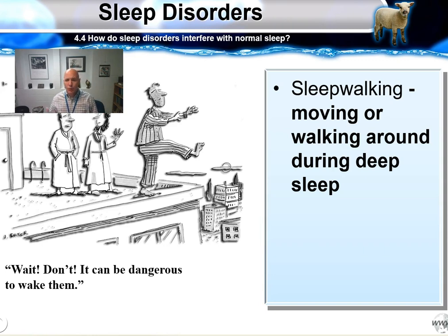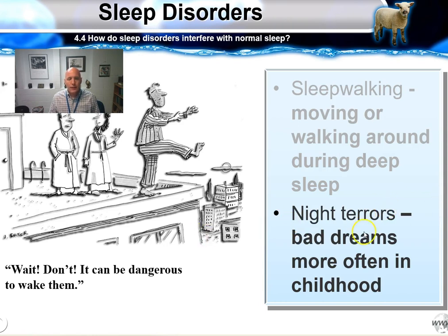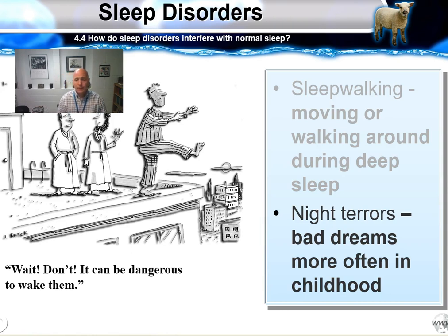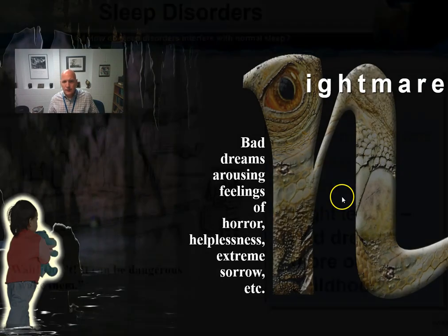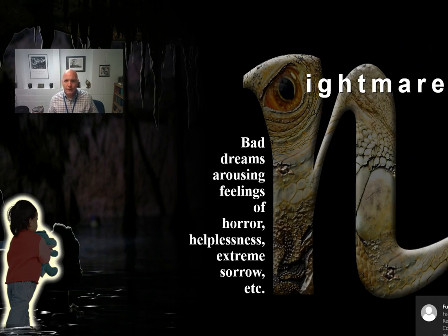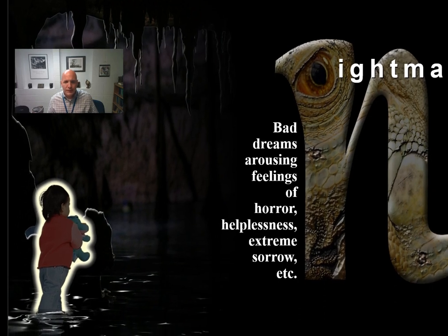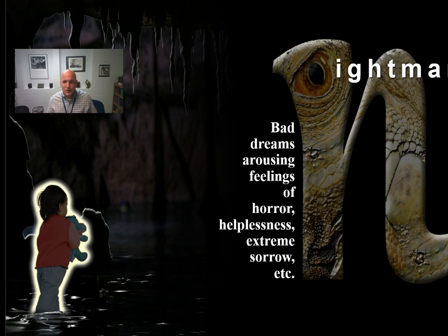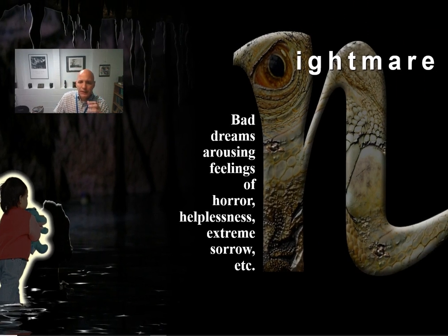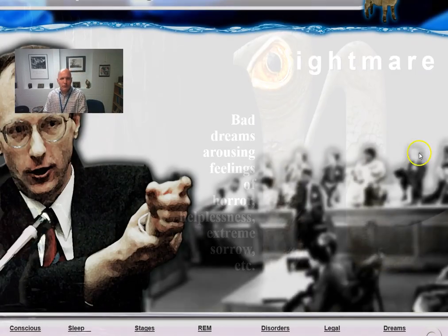Sleepwalking and sleep talking are both referred to as somnambulism. Sleepwalking is moving and walking around during deep sleep. Night terrors, more frequent in young children, involve screaming, kicking, and yelling during stage four sleep — children are very resistant to being awakened. Night terrors are different than nightmares. A nightmare is simply a stage one bad dream; night terrors are stage four. The two are different because of what's happening in the brain.